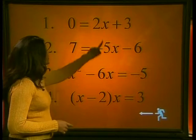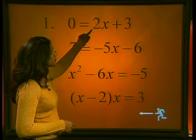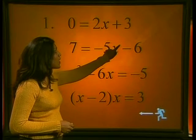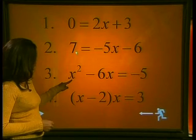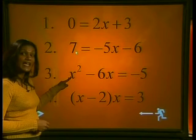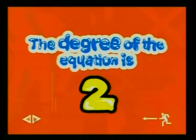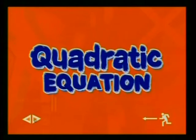The first equation has x raised to the power of 1, which means it is a linear equation. The second equation also has x raised to the power of 1, so it is also a linear equation. The third equation has x raised to the power of 2. We say the degree of the equation is 2, meaning the highest power of x is 2. Any equation where the highest power of the variable is 2 is called a quadratic equation.